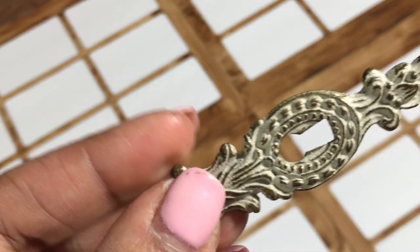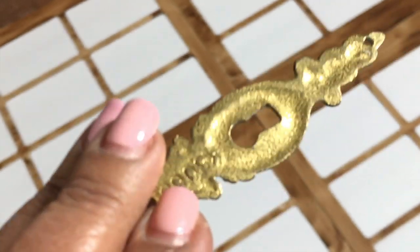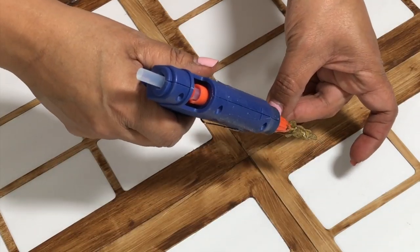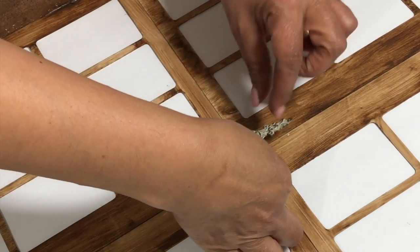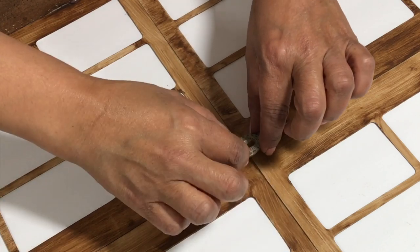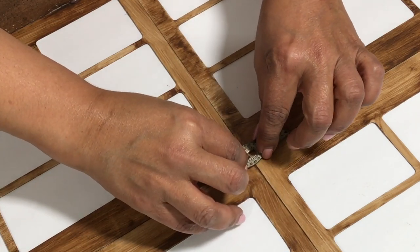I found this antique keyhole cover in my stash. A while back, I bought a hutch from Restore, and I revamped it. This was on one of the doors, and I removed it and put new knobs on it. Taking a little hot glue, I go ahead and glue it down to the center.